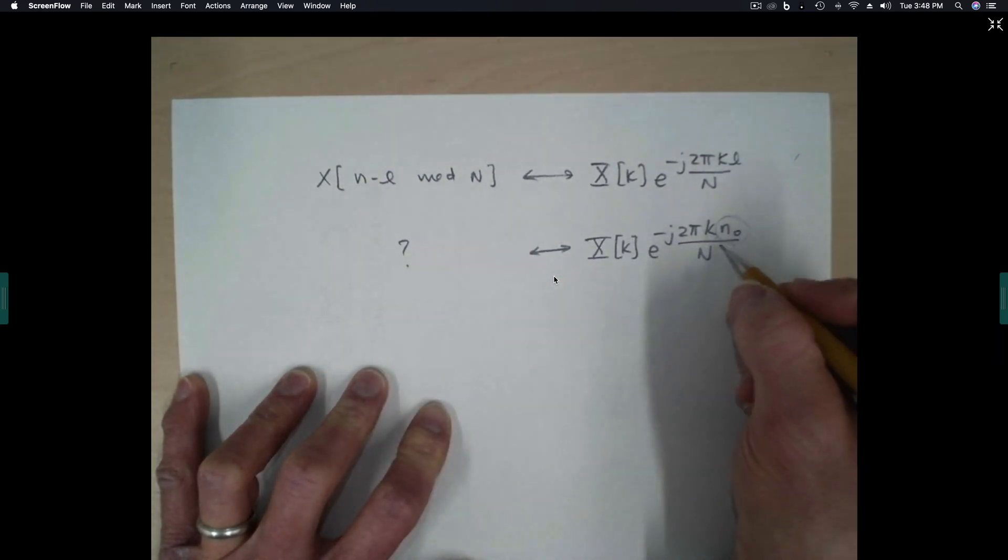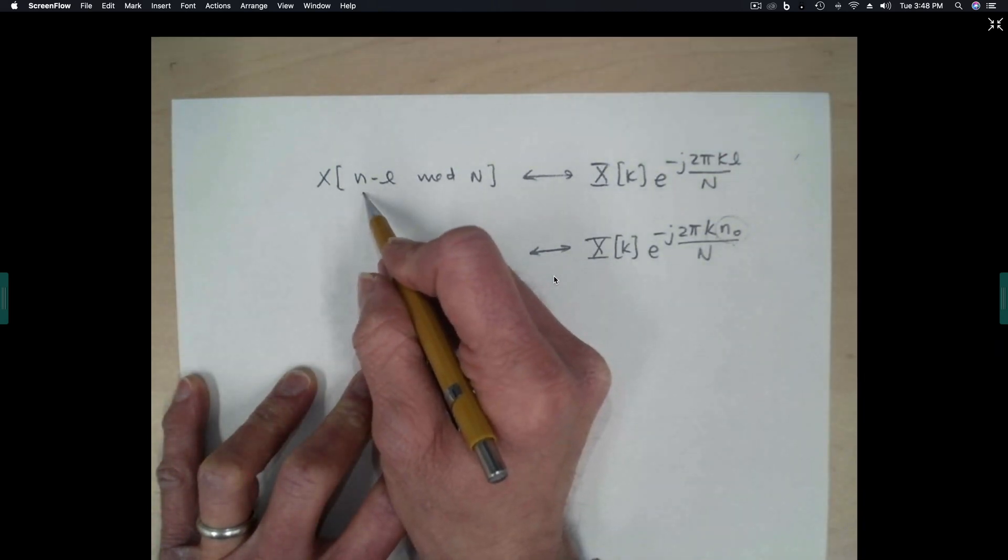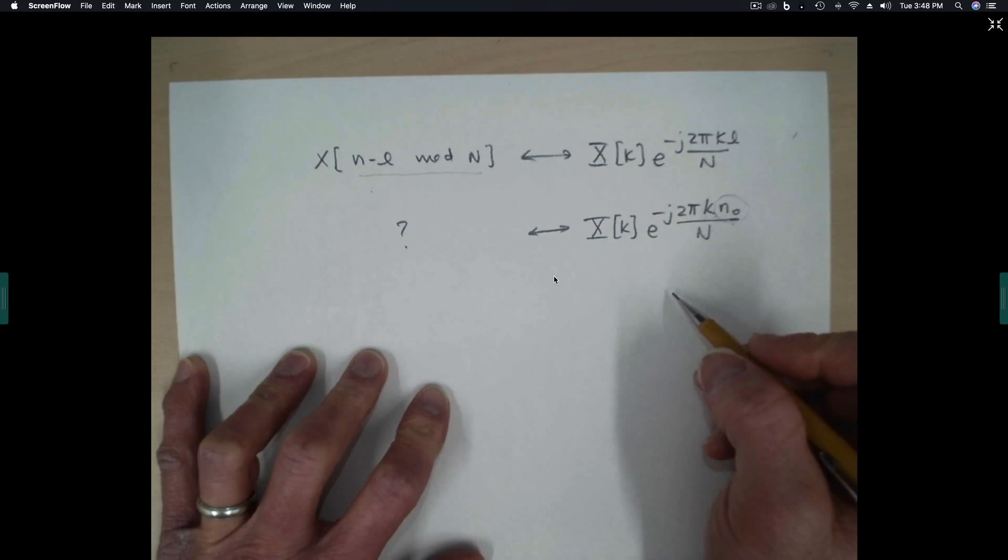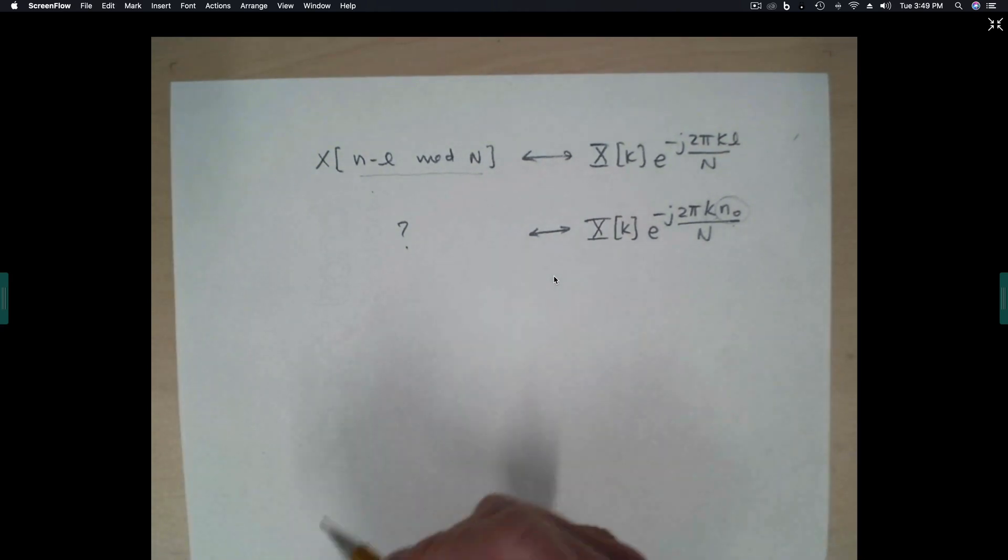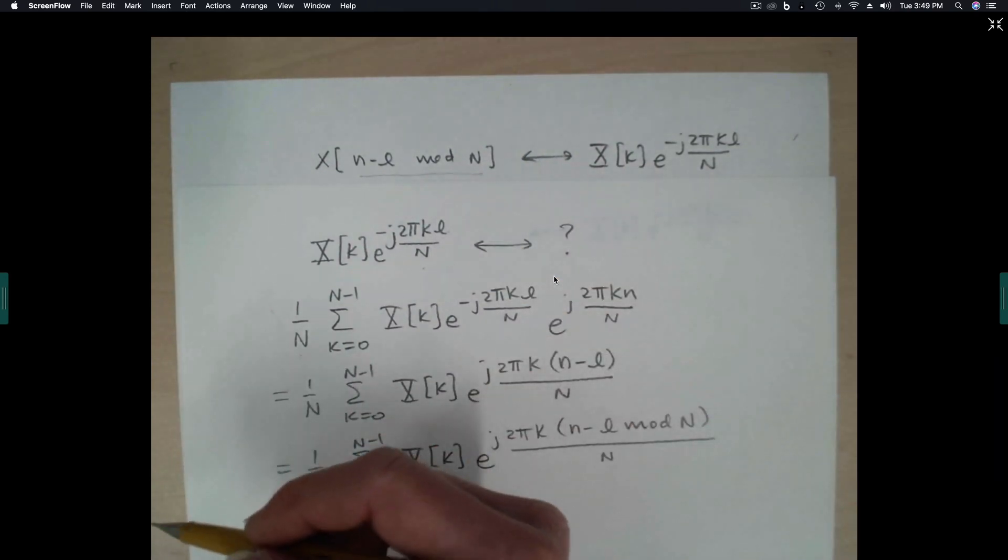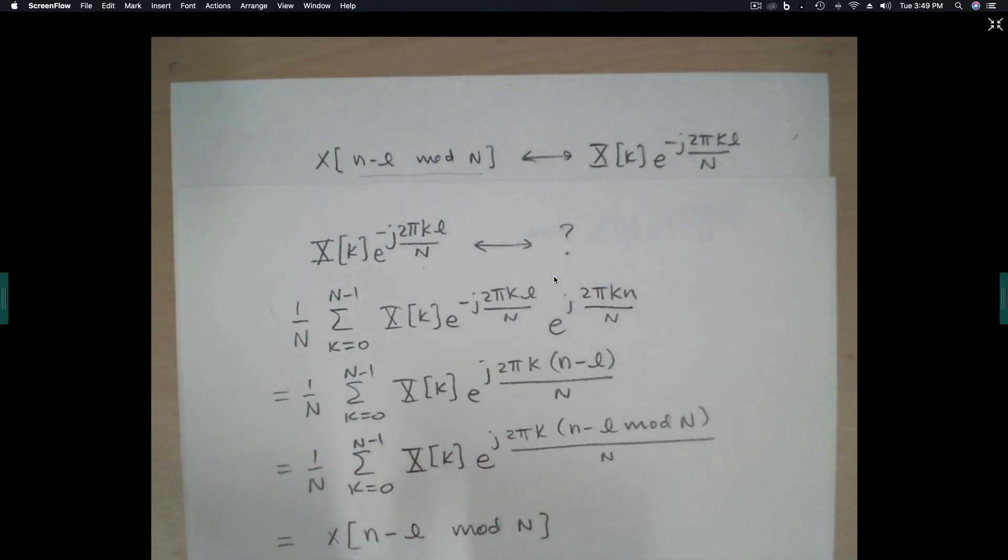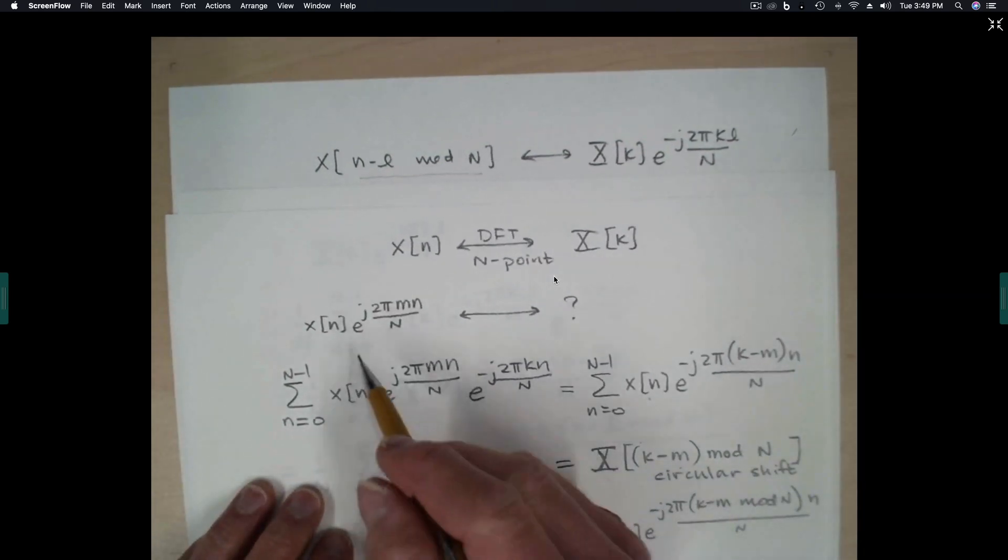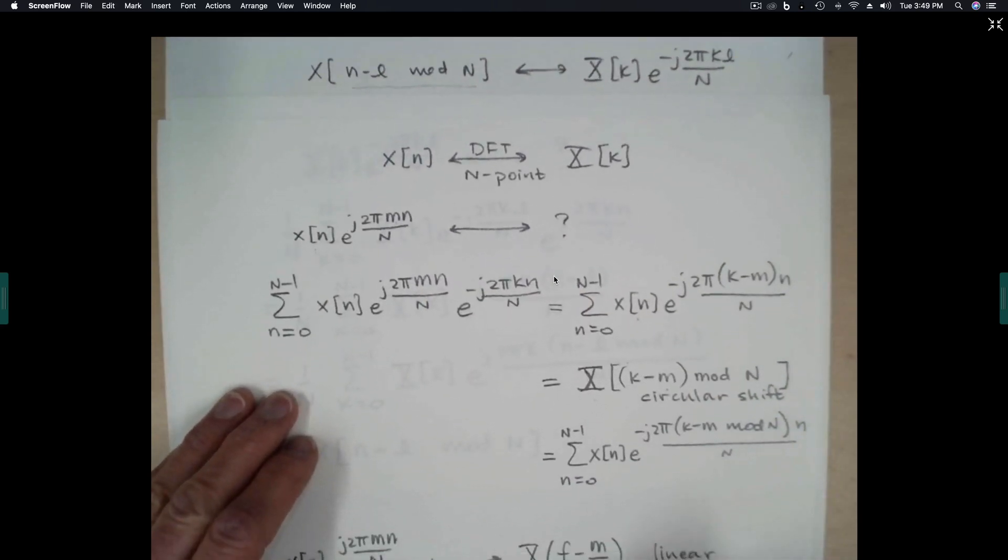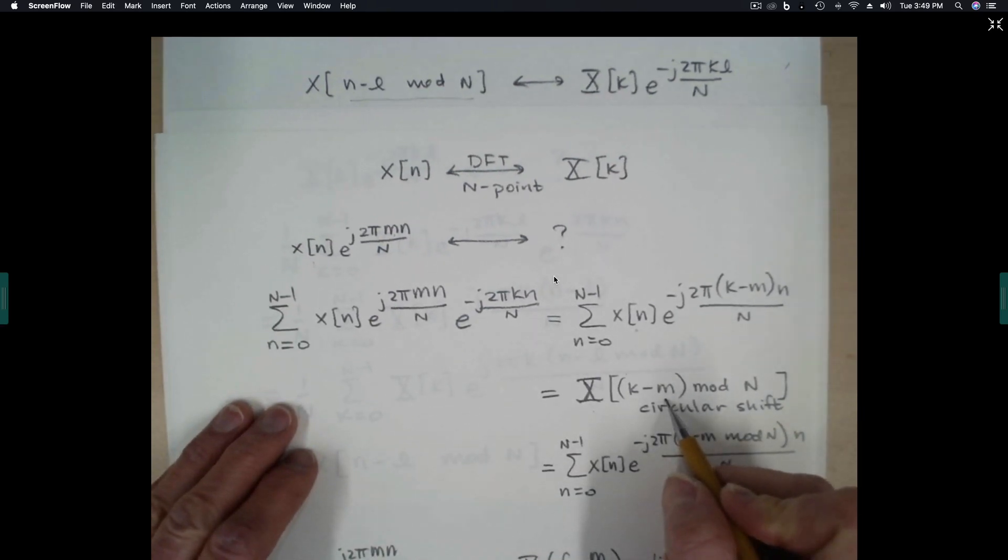In other words, we're not going to be able to shift... We're not going to be able to do a circular shift by a non-integer value. So with the DFT, there are some restrictions on these transforms that we just looked at. L has to be an integer. Also, in the other transform that we worked on, this property, in this case, m has to be an integer in order for this circular shift property to work out. Because we can't shift by something that's not an integer.